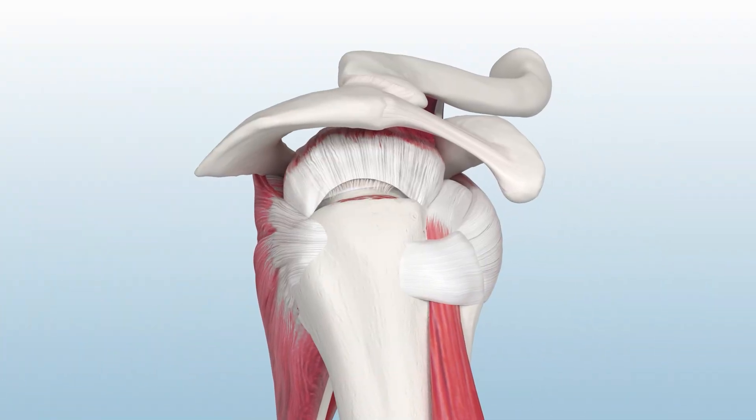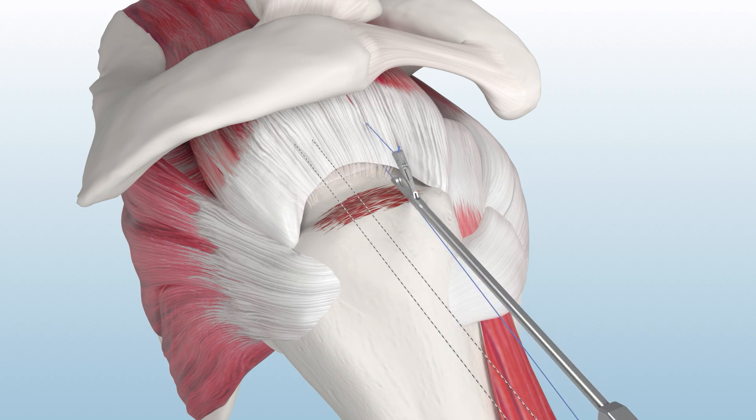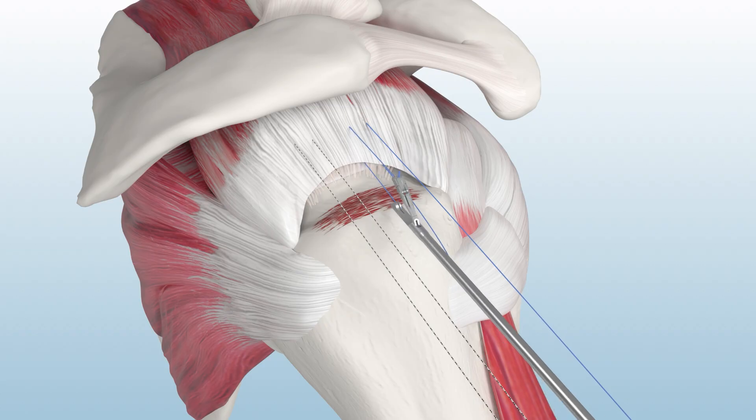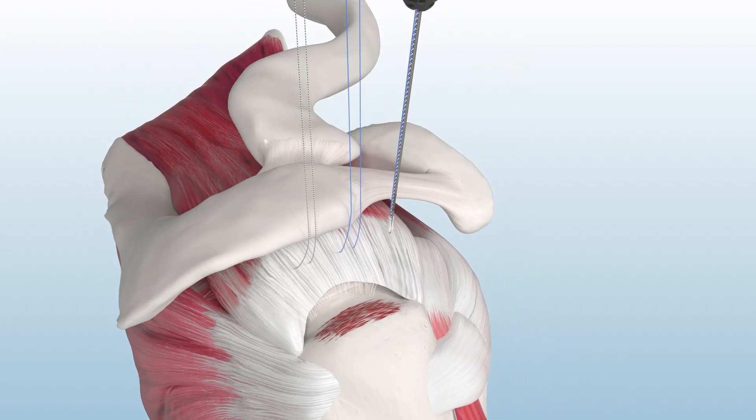To prepare for augmentation, place two mattress stitches in the medial aspect of the tendon using free suture. Once passed, dock all suture through an accessory portal.